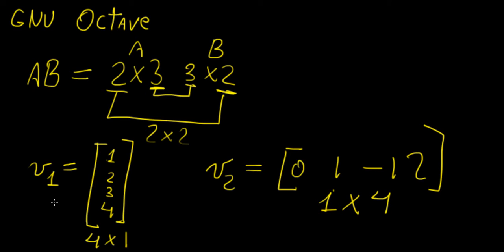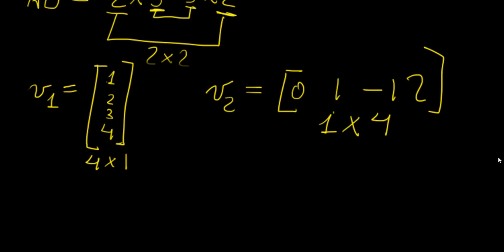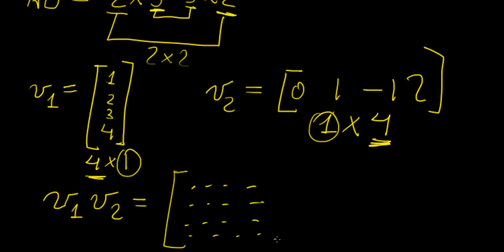So can we perform multiplication with these vectors? Well, let's have a look. Let's say we wanted to have vector 1 times vector 2. So because the number of columns in this one matches that, then it means that we can perform the multiplication. And what's the resultant matrix going to be from those two vectors? Well, it's going to be a 4 by 4 matrix, so we're going to have four elements here, four elements here. So we're going to have four rows and four columns.